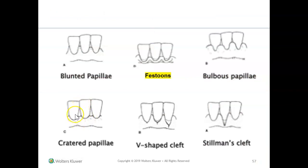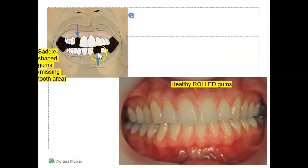We can also have a cratered papilla. If you look at a picture of a cratered papilla, it just means there's a little dip in the papilla — that dip is known as a crater. Sometimes our papillas could be cratered. We can also have saddle shape areas where the tooth is completely missing, and that area is known as saddle shape.